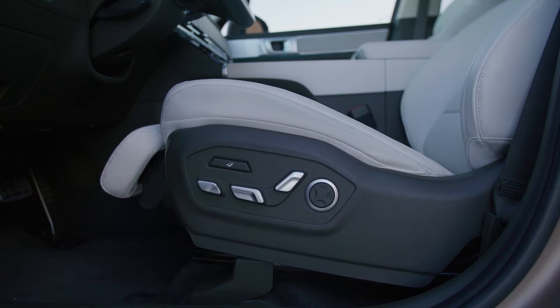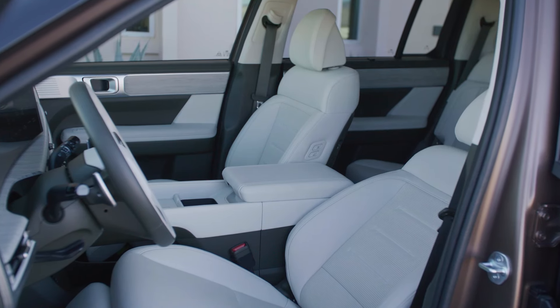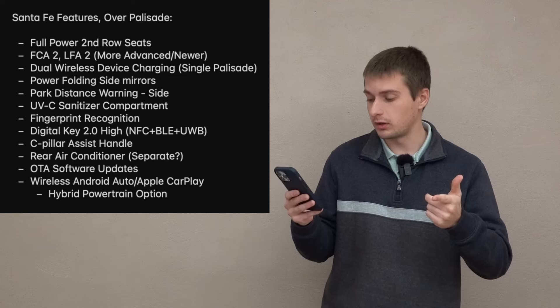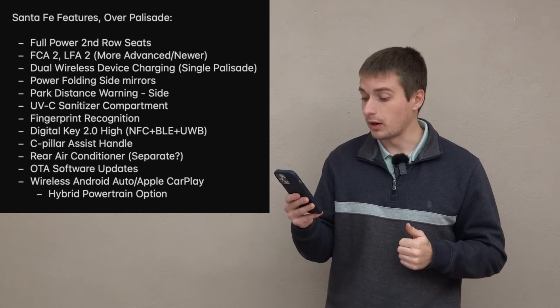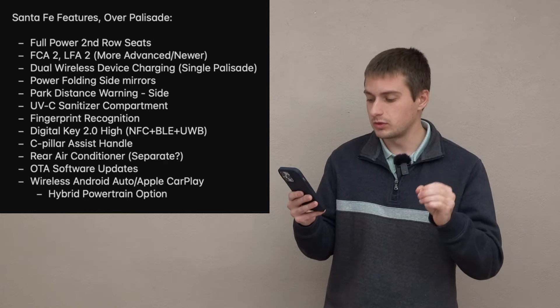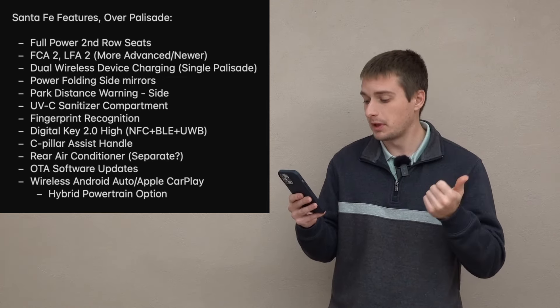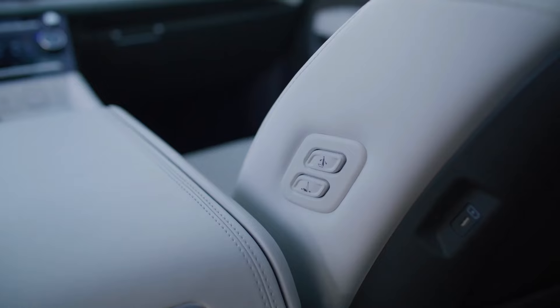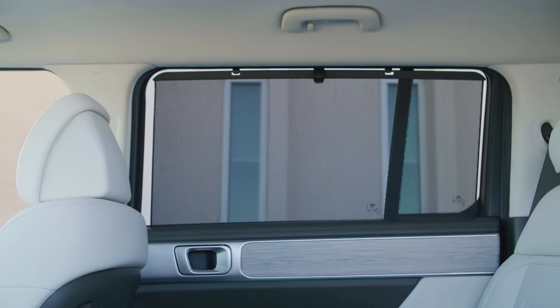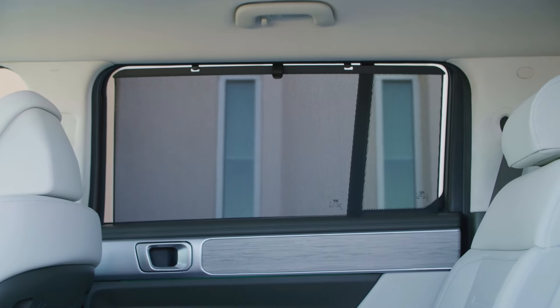Now vice versa, in the Santa Fe, you're going to get all of these features over the Palisade. You're going to get full power second row seats with reclining tilt relaxation. So both captain chairs in those vehicles are going to be full power versus that of the Palisade. You get the Forward Collision Avoidance 2, Lane Follow Assist 2, which I believe are just more advanced or newer versions of the same technology. Dual wireless charging pads versus a single in the Palisade, power folding side mirrors, park distance warning for the front, rear, and side of the vehicle versus only the front and rear in the Palisade, UV-C sanitizer compartment, fingerprint recognition.